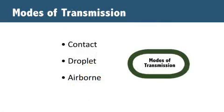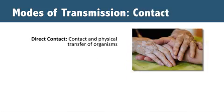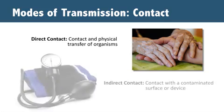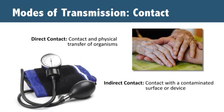Once a germ leaves the body, it has to have a way to spread. There are three main types of spreading or transmission: contact spread, droplet spread, and airborne spread. Diseases spread by contact or touching, like MRSA, are spread through physical contact with the infected person — called direct contact — or through physical contact with a contaminated surface or device such as a towel or BP cuff, called indirect contact.